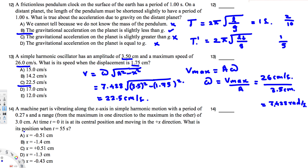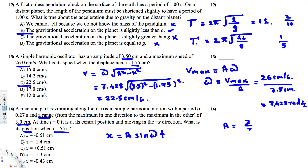For position in simple harmonic motion we use x = A·sin(ωt). The time is given. The range is 3 centimeters, so the amplitude is range divided by 2: A = 3 ÷ 2 = 1.5 centimeters.